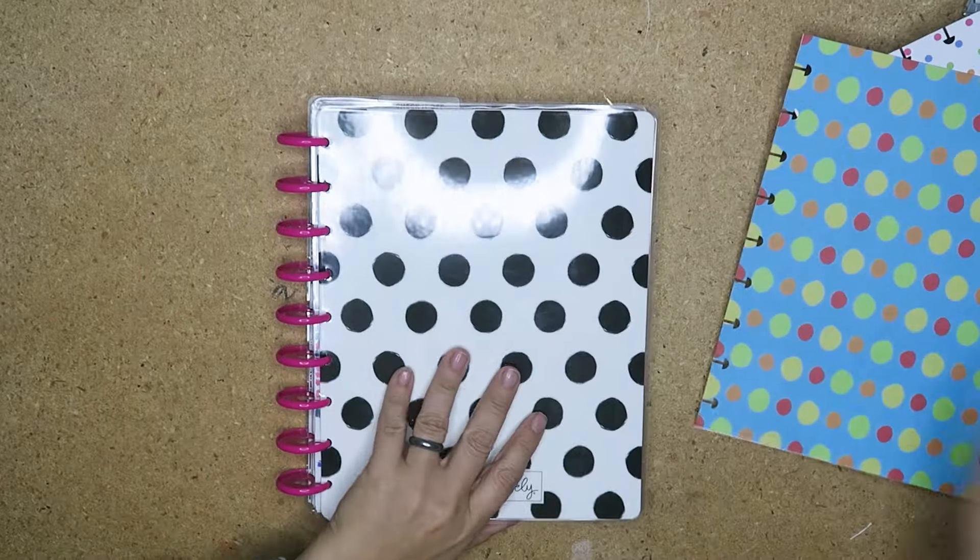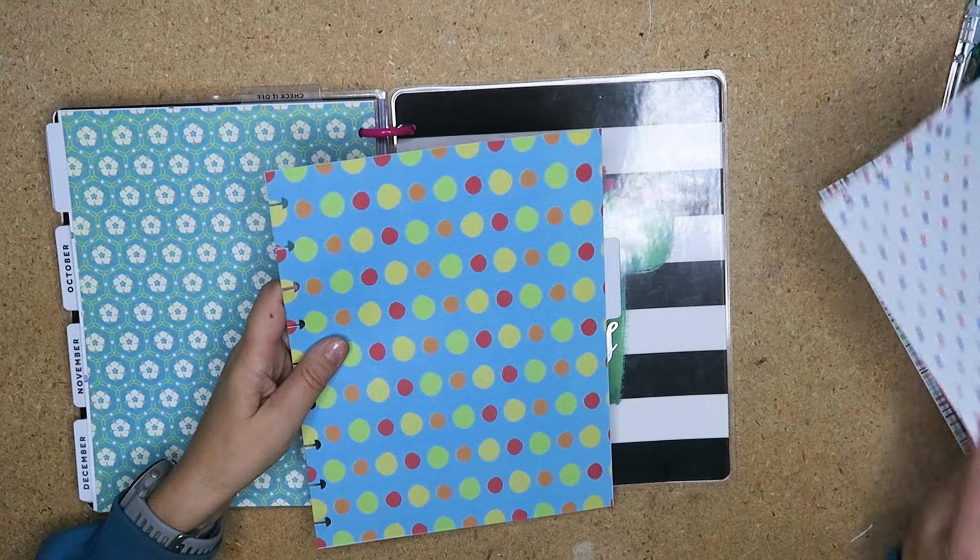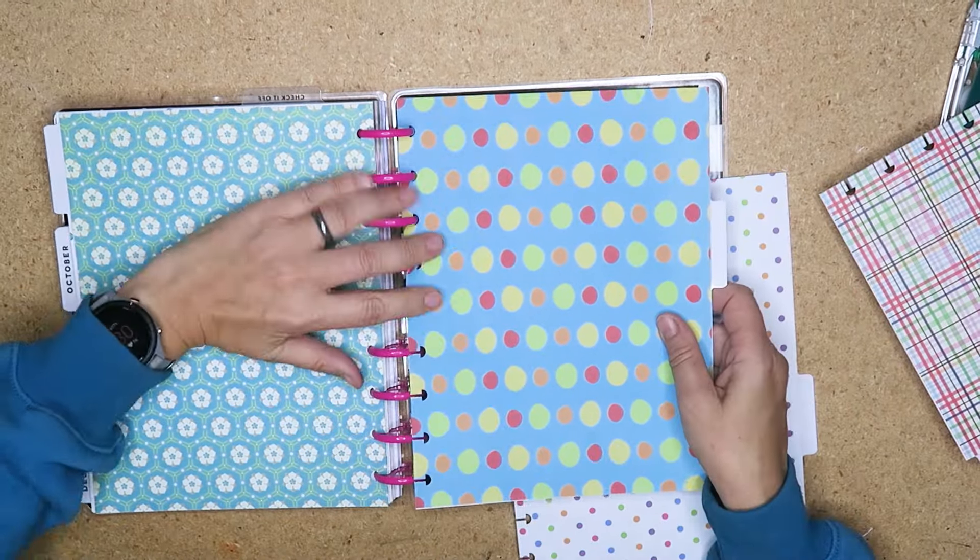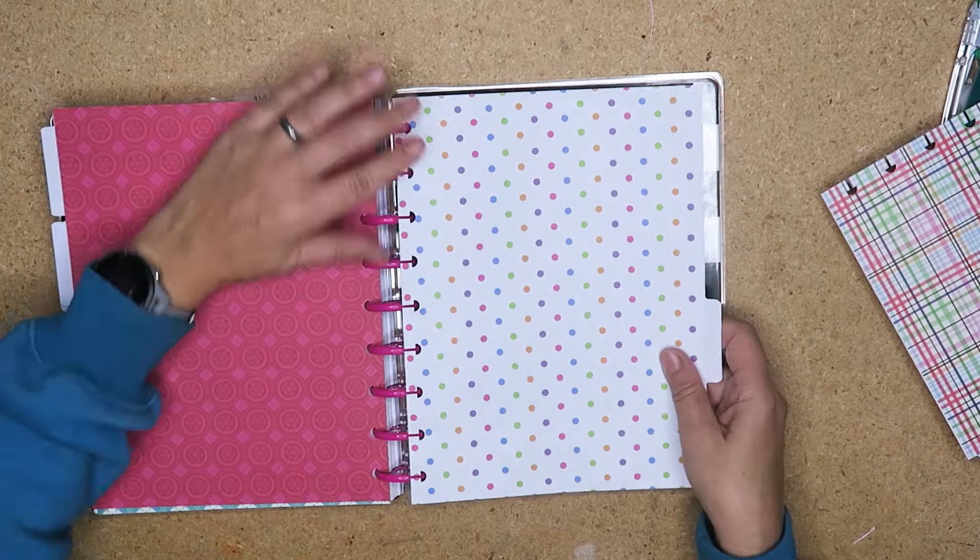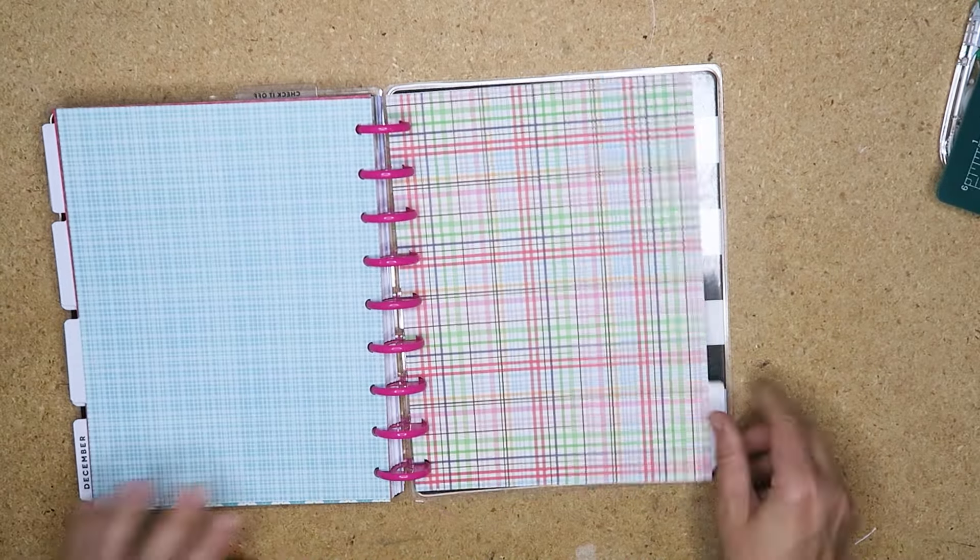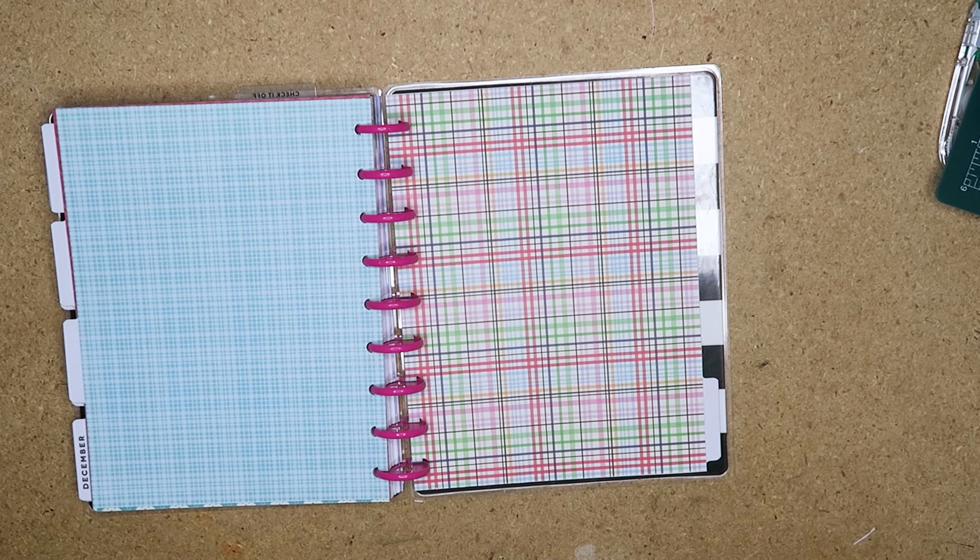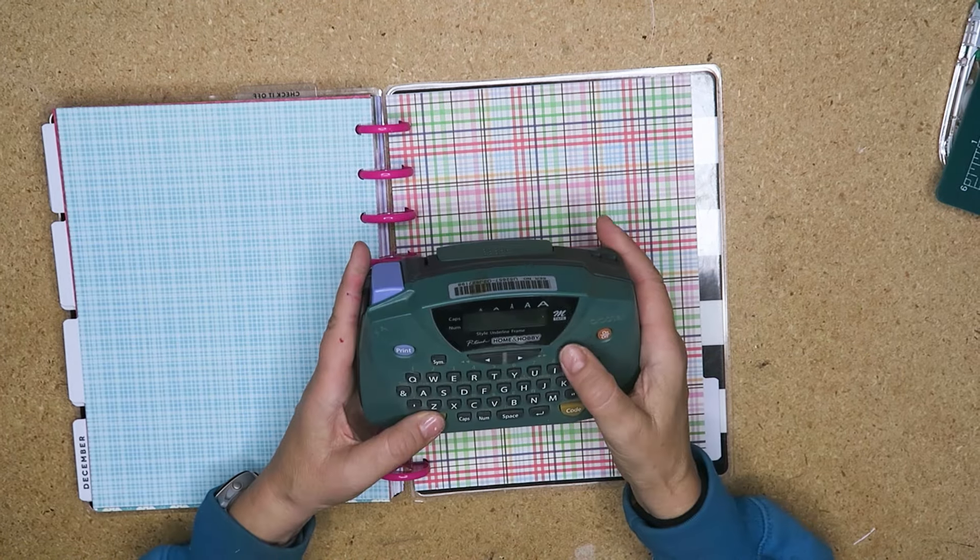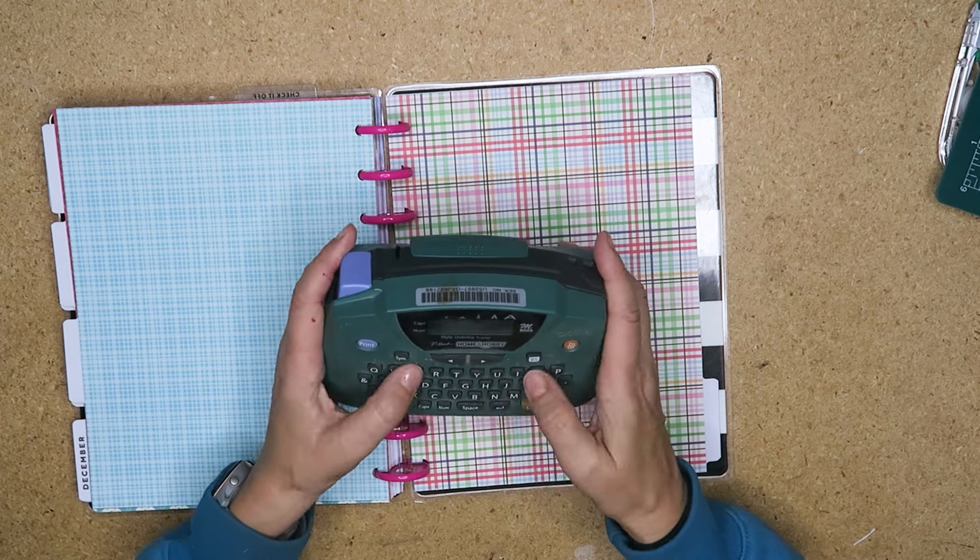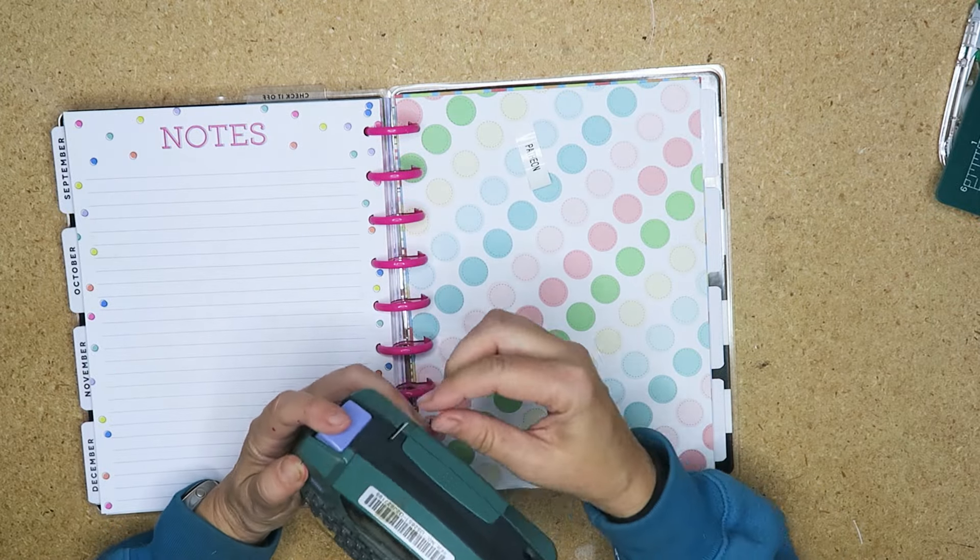All right. I'm going to do that a couple more times so that I've got all four. All righty. That is my dividers completed. So I'm just going to put those in. This is why if I ever see a cute pattern paper or something, I will always pick it up because it's always worth picking it up so that you can make a divider out of it.